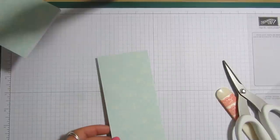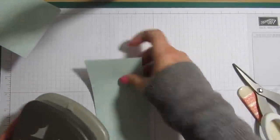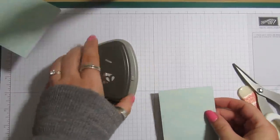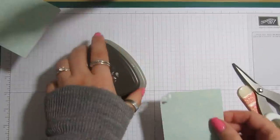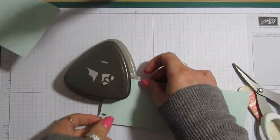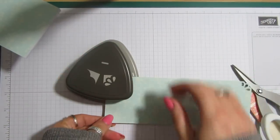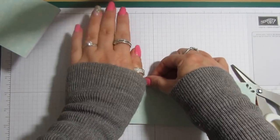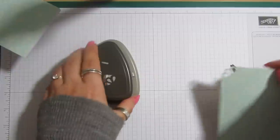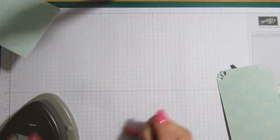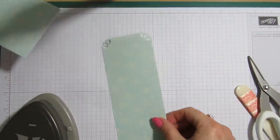And then, excuse me. I've got this curvy corner trio punch. I know it's retired now. But I just want to use this on the edges of my paper. So, that's done. It just gives a really pretty effect, I think.